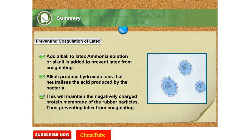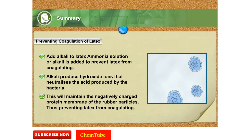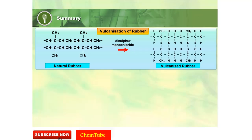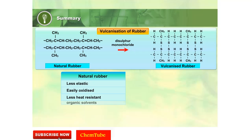Ammonia solution is usually added to latex to prevent it from coagulating. Vulcanization is a process of hardening rubber by chemically combining it with disulfur monochloride. The sulfur atoms form strong covalent bonds between the isoprene units with carbon atoms. The sulfur atom attacks the carbon double bonds to form C-S-S-C bonds between different carbon chains. These bonds affect the properties of natural rubber.